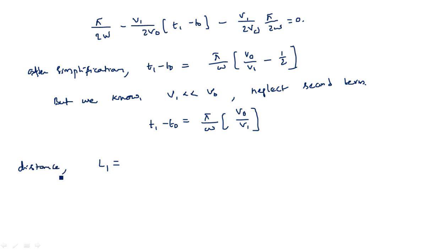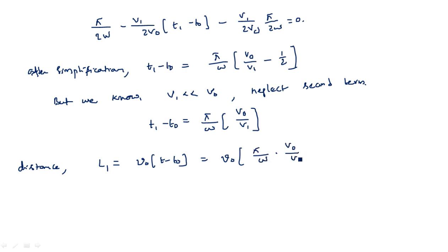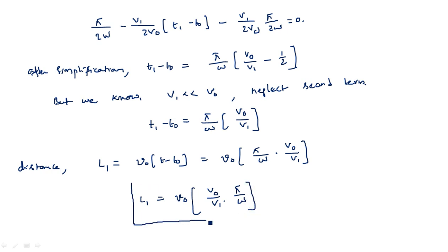Substituting into the distance L1 — since L_max, L1, and L_min are all the same because we equated the second term to zero — L1 equals v0 times (t1 minus t0), which gives L1 equals v0 times (pi by omega) times (V0 by V1). This is the drift space from buncher cavity to catcher cavity for which the electron must travel.